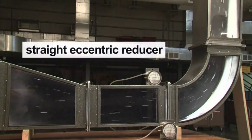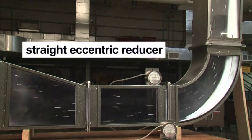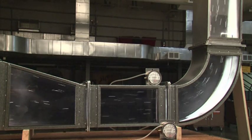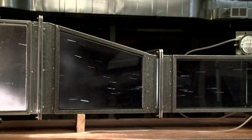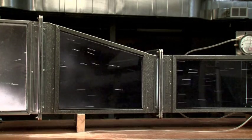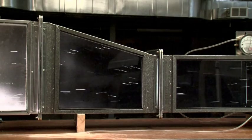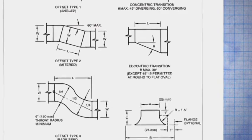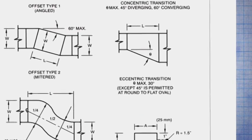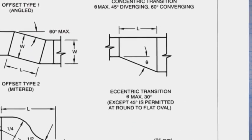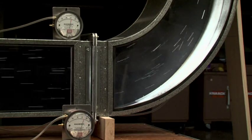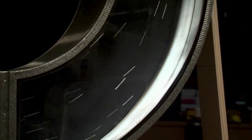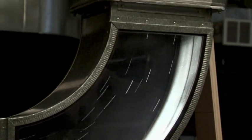This wide shot shows a straight eccentric reducer, a straight duct section, and a long radius elbow. The reducer changes dimensions over a fairly long length so that little turbulence is introduced — note the smooth airflow pattern. The reducer is easily within the recommendations for offsets and transitions in SMACNA's HVAC Duct Construction Standard. The long radius elbow is so designated because the throat has a large radius that provides a low resistance path for airflow.